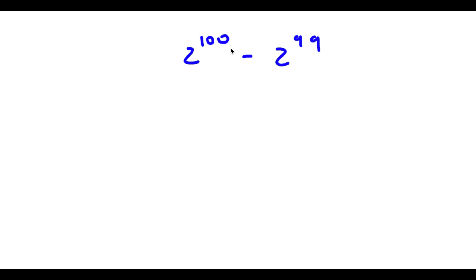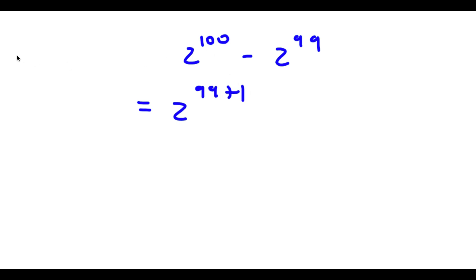So I have 2 to the power of 100 minus 2 to the power of 99. Now, 2 to the power of 100 is the same thing as 2 to the power of 99 plus 1, because 100 is equal to 99 plus 1.